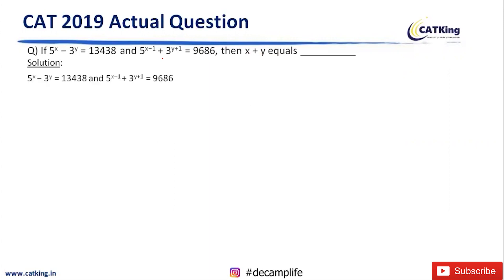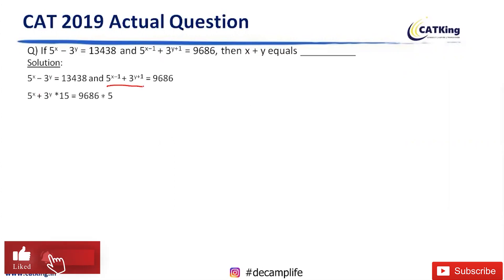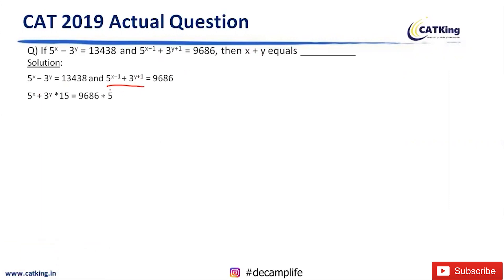See, this is given. We can rewrite this equation as 5x divided by 5, and this would be 3y into 3 — multiply mein a jae gaya.